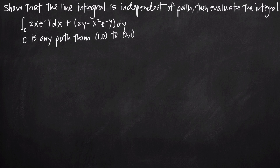In this video, we're going to be talking about independence of path in a vector field. In this particular problem, we've been asked to show that the line integral is independent of path and then, if it is, to evaluate the integral. The line integral we're dealing with is the integral of 2x e to the negative y dx plus the quantity 2y minus x squared e to the negative y dy over the curve c, where c is any path connecting the coordinate points (1, 0) and (2, 1). Our first task is to show that the line integral is independent of path.